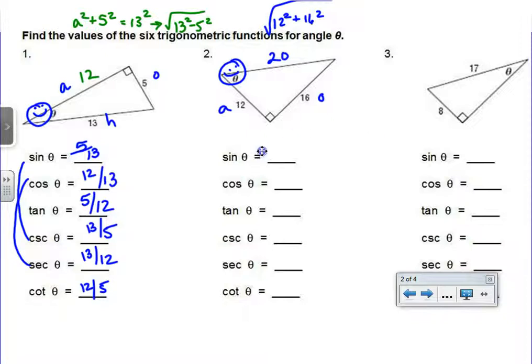Sine is opposite over hypotenuse, 16 over 20. But what would be wrong with that answer? Reduce it. How about 4 over 5? Cosine would be adjacent over hypotenuse, but I need you to reduce that. 3 over 5. Tangent would be opposite over adjacent, 16 over 12, reduced to 4 thirds. And now if you remember who's buddies with who, this is an easy rest of the problem. Cosecant would be 5 over 4. Secant would be 5 over 3. And cotangent would be 3 over 4.